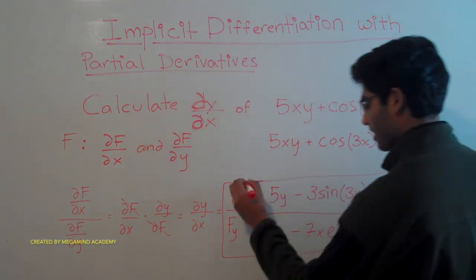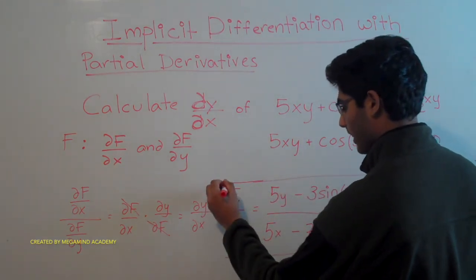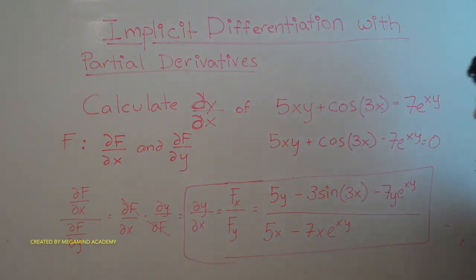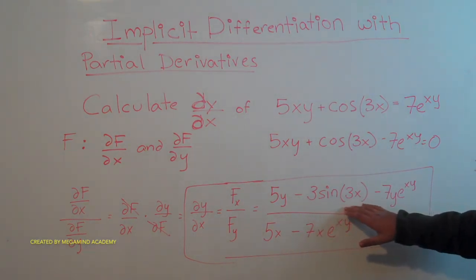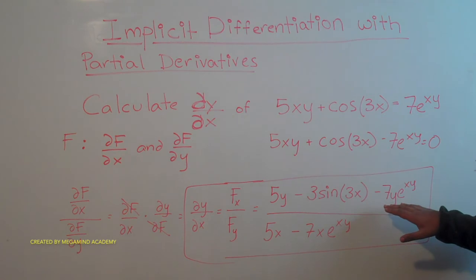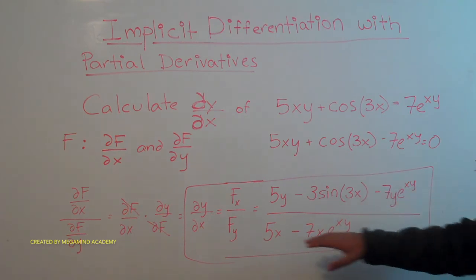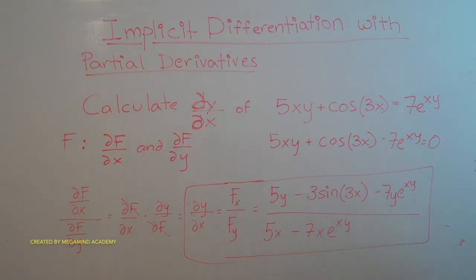So this gives us dy/dx. dy/dx from this problem is equal to 5y minus 3 sine of 3x minus 7y times e to the xy power, all over 5x minus 7x e to the xy power.